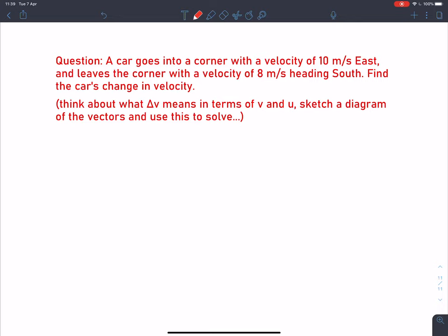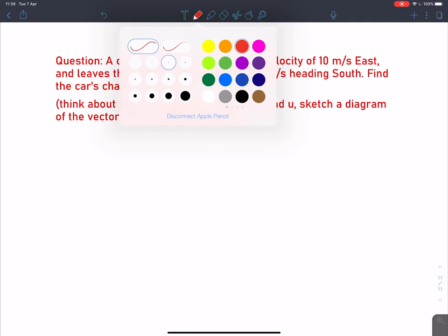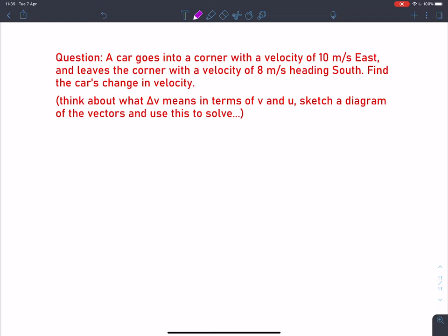Let's have a go at a question. Pause the video if you want to try it yourself. The car goes into a corner with a velocity of 10 meters per second east. With all of these, start with a sketch. My initial velocity is 10 meters per second to the east. It leaves the corner with a velocity of 8 meters per second heading south.